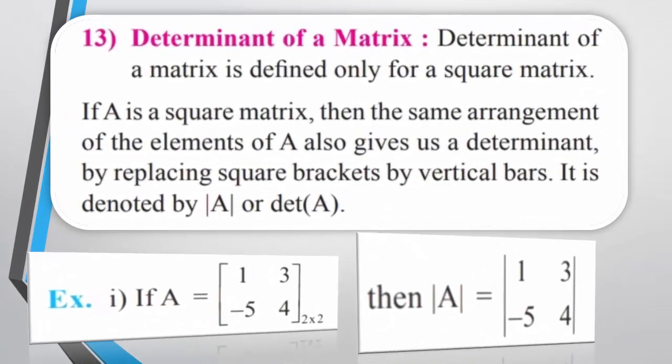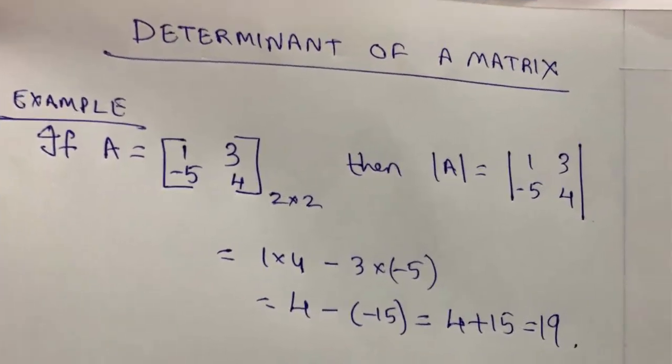Let's learn about the determinant of a matrix. Determinant of a matrix is defined only for a square matrix. If A is a square matrix, then the same arrangement of elements also gives us a determinant by replacing square brackets with vertical bars. It is denoted as determinant of A or |A|. For example, if A is a 2 by 2 matrix with elements 1, 3, −5, 4, then determinant of A equals 1×4 minus 3×(−5), which equals 4 minus (−15), which equals 4 plus 15 equals 19.